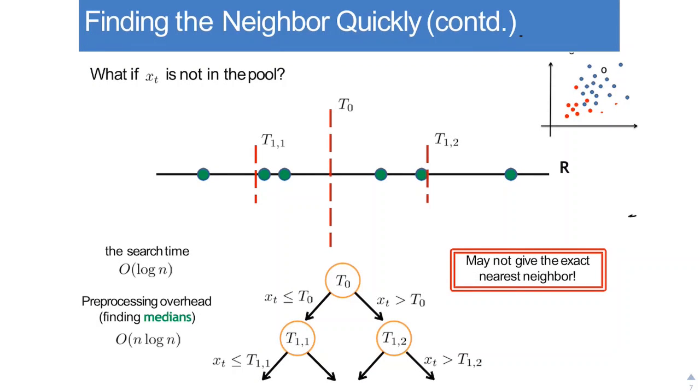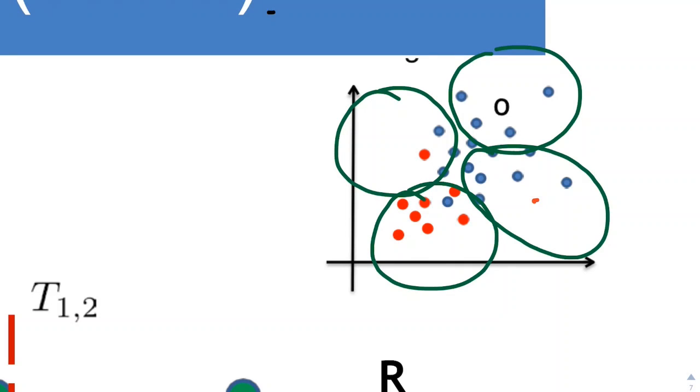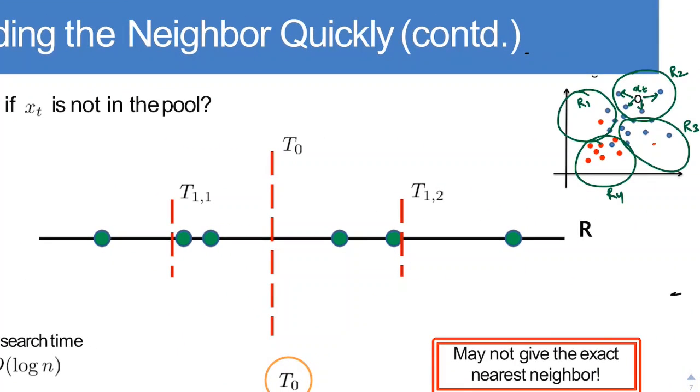So how do we use this idea in finding the nearest neighbor quickly? Say we have the same example. So if we can divide our training data into regions, say we have these four regions and check in which region our test point lies. Say this was R1, R2, R3, R4. So we found out that our test data point Xt lies in region 2. Now what we have to do is just calculate the distance of Xt with the points that lie in this region. So we are not calculating the distance of Xt with all the points in the data set. We are just calculating the distance with the point in that particular region. So we are saving a lot of time. So in a way we are finding the nearest neighbor quickly.